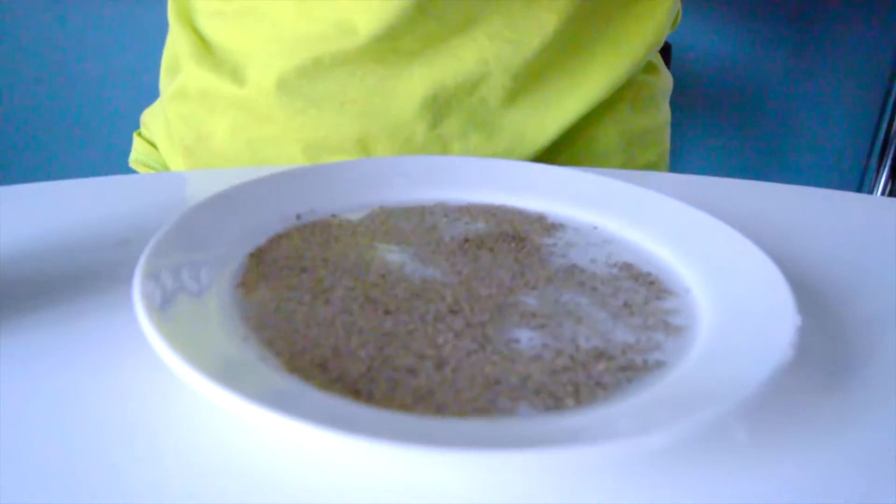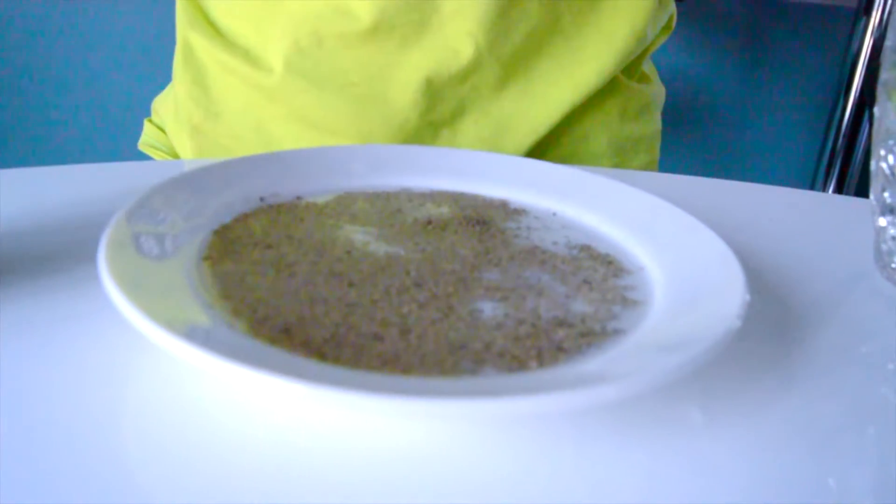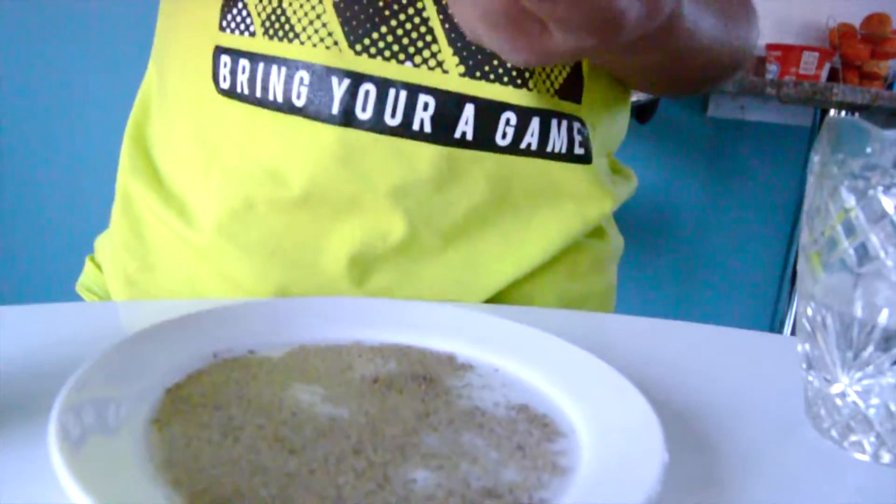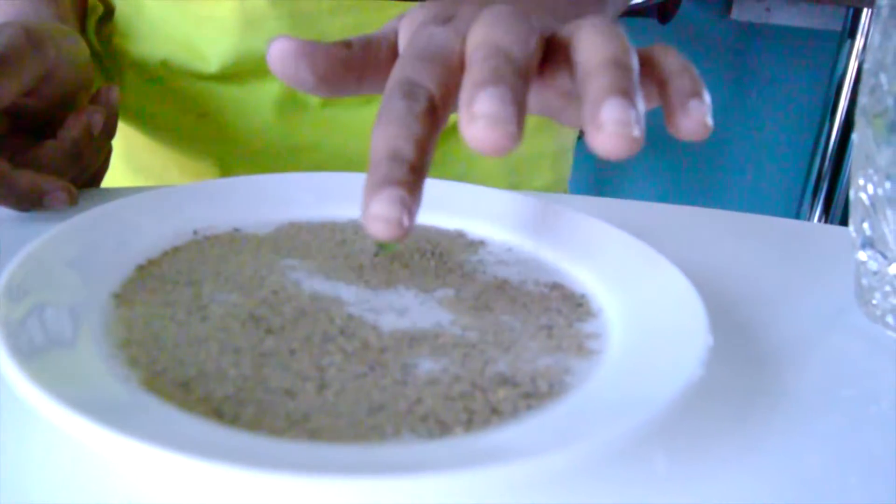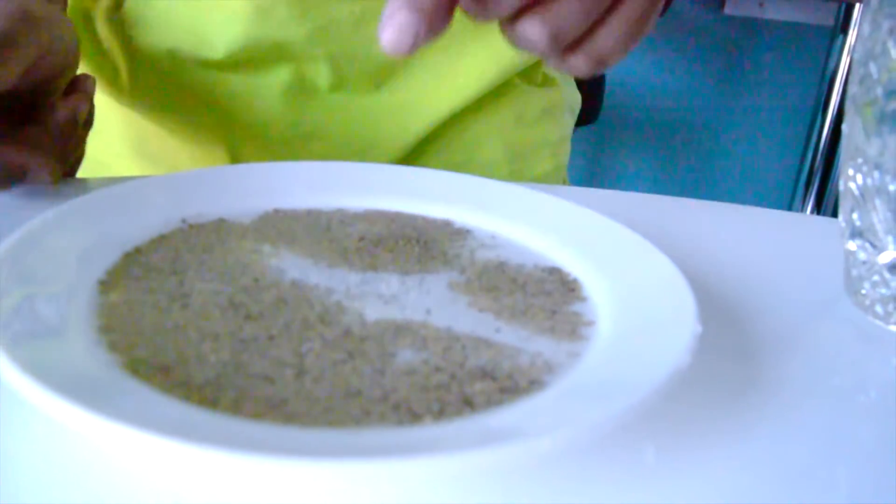So what you're going to take is your dish soap. You're going to just take a little bit and put it right on your hand, just like that. Then you're just going to push, or slowly just keep on pushing it in the water, and you should see that the pepper runs away.